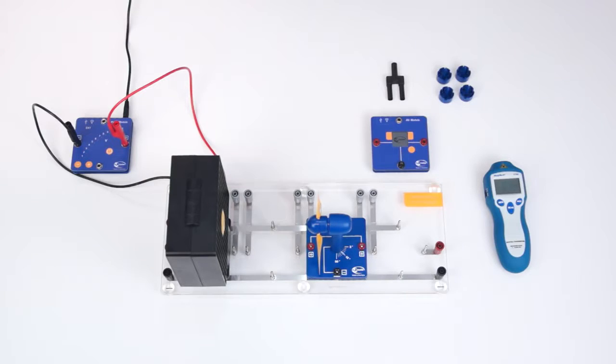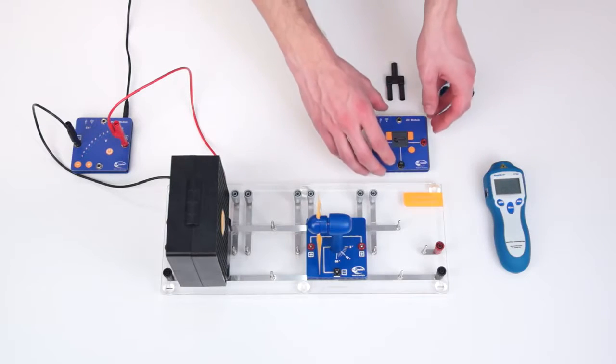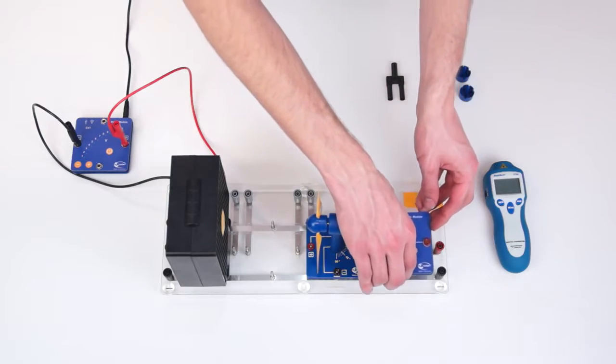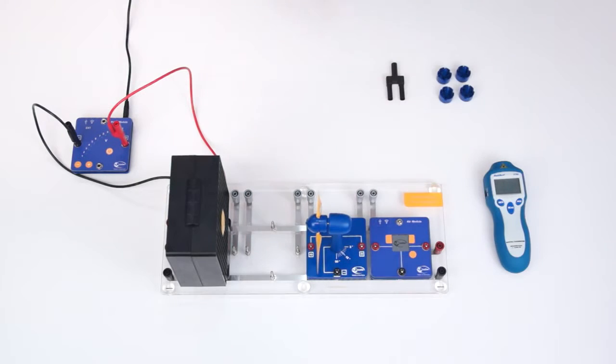To measure the open circuit voltage we connect our model to the AV module. This module measures voltage and current. A short circuit plug connects the AV module and the wind turbine model. After switching on the AV module our setup is ready for implementation.